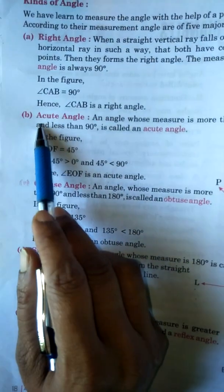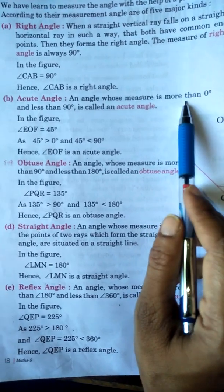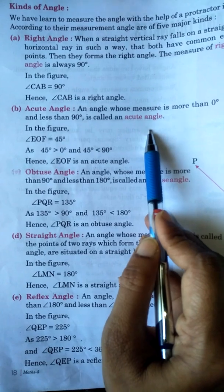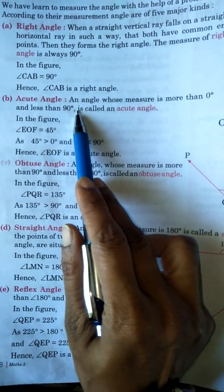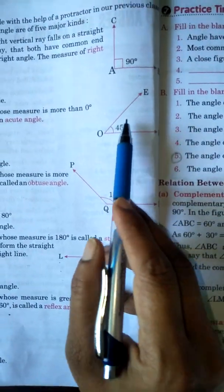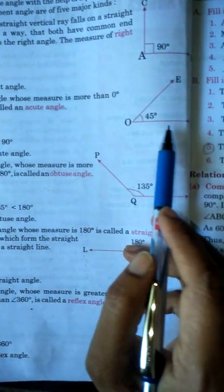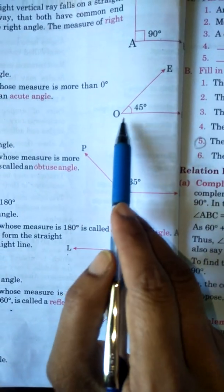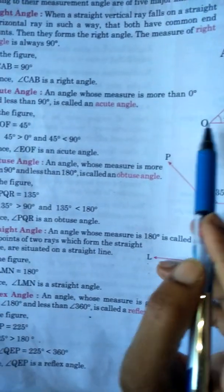Next angle is acute angle. An angle whose measure is more than 0 and less than 90 degrees is called an acute angle. Jo angle 0 degree se bada hota hai lekin 90 degree se chhota hota hai, wo acute angle hota hai. Yahaan dekhein angle EOF, jo 45 degree ka hai — 0 se bada hai lekin 90 degree se chhota hai. Jo bhi 90 degree se chhote angle rahenge, wo acute angle hote hain.